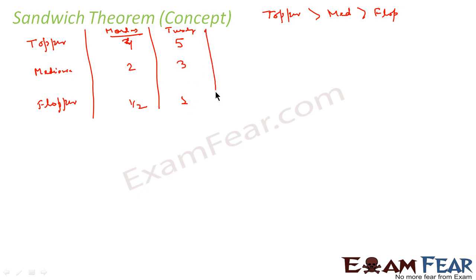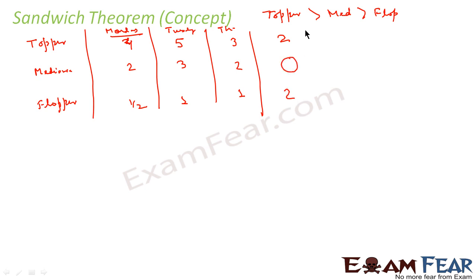Now let's suppose on a particular day, we are told that the topper watched for two hours and the flopper also watched for two hours, and I want to find how many hours the mediocre watched. Can we find it? Because we have the assumption that the topper always watches greater than or equal to the mediocre, and the mediocre always watches greater than or equal to the flopper.